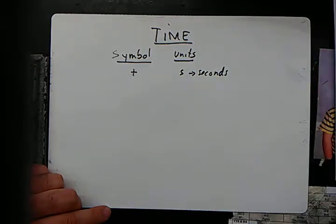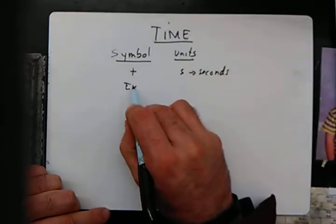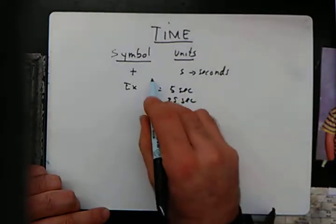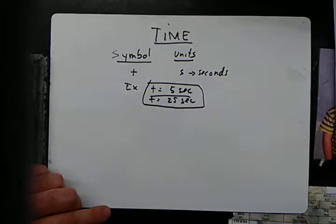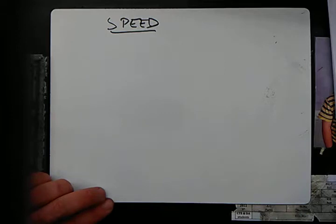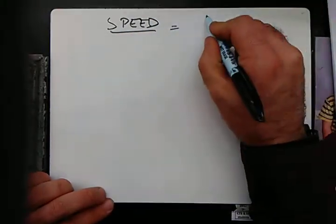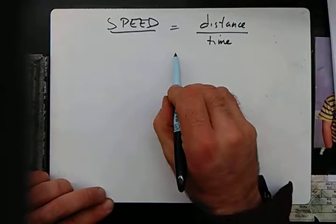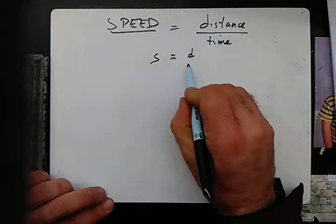An example would be t equals five seconds, or t equals 25 seconds. So we can take our two most fundamental measurements — distance and time — and combine them into something called speed. Speed is equal to distance divided by time, so: speed equals d over t.